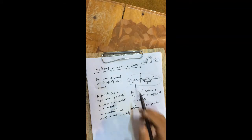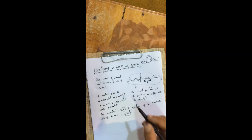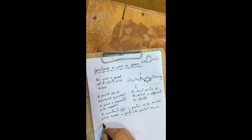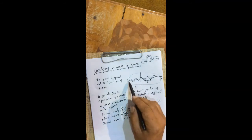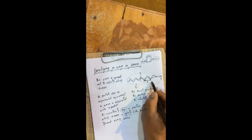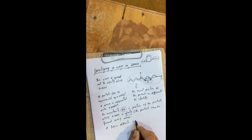So we cannot exactly identify the particle at a particular point — the uncertainty in position of the particle is infinity, and the particle can be found everywhere. Now, since this wave has a definite wavelength, it also has a definite wave number k, because k = 2π/λ. If λ is definite, then k is also a definite value.